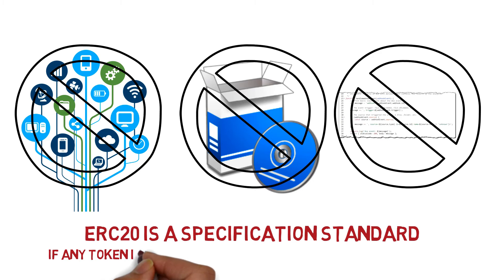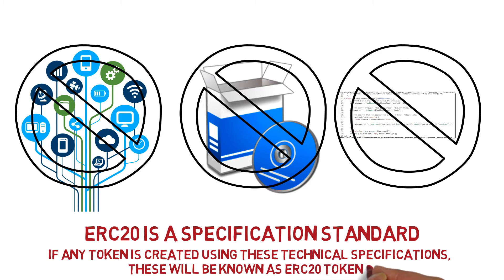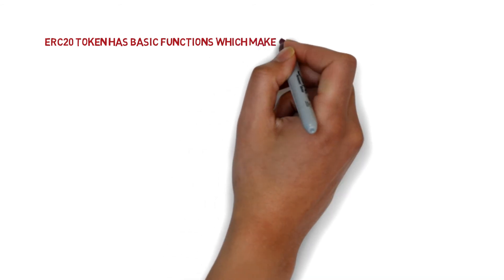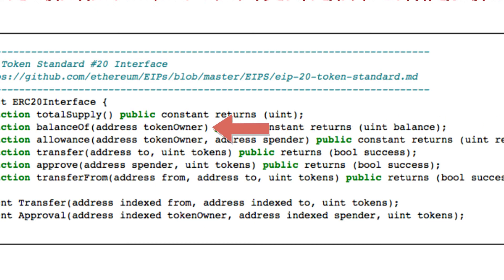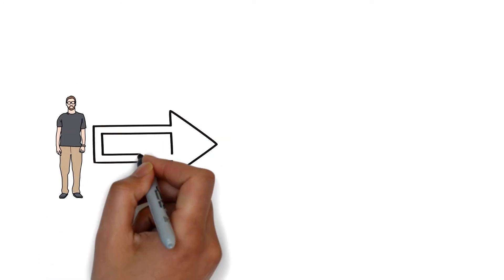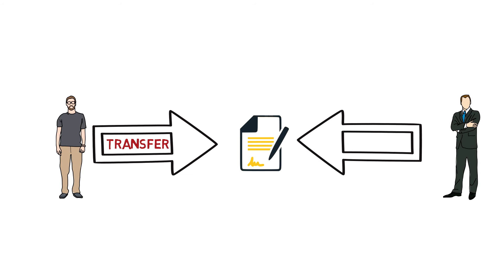ERC20 is basically a specification — a standard for creating tokens. That means if any token can implement these technical specifications, it can be said to be an ERC20 token. In ERC20 protocol, there are basic functions which can be used by any token and easily used by exchanges. There are standard features like balance of the token at an address, approving transfer of token, and total supply of tokens. For example, a developer may use a function called 'transfer' for transferring a token, but a colleague may use a function called 'send' for the same functionality.